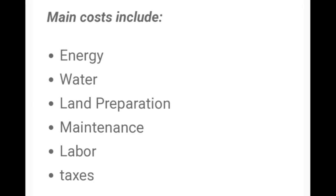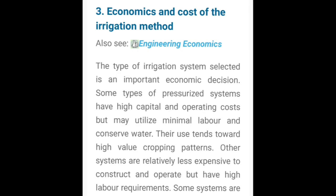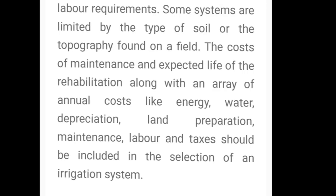Cost में कौन-कौन से factors होते हैं — जैसे energy: बिजली से चलाओगे, जैसे tubewell अगर आप ले रहे हो, या फिर कोई और irrigation system है। इसके अलावा water, land preparation, maintenance, labor and taxes — these are the factors which are included in economics and cost of irrigation method.